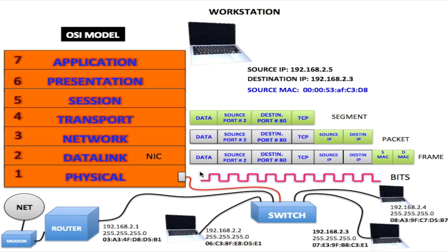Depending on the speed of the network card, you can have a local area network running at a thousand megabits per second if it is a really fast network, or a hundred megabits per second. Back in the old days, networks were really slow — just 10 megabits per second. But today, most networks are usually between a hundred megabits and one gigabit, which is a thousand megabits per second. From here, of course, it will go to the switch and then to whatever computer it is assigned to go to.